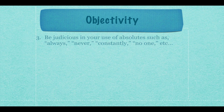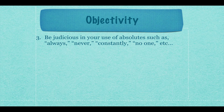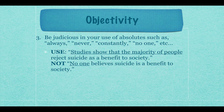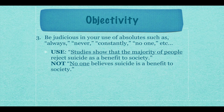You also want to be judicious in your use of absolutes such as 'always,' 'never,' 'constantly,' and 'no one.' These can be used in academic writing, but be careful not to overuse them. For instance, you could say 'studies show that the majority of people reject suicide as a benefit to society,' but you could never say 'no one believes suicide is a benefit to society' — because it's not true, and even if it were 99.9% of people, asserting an absolute can lose readers who can think of an exception, which can disqualify your paper as valid. So be very careful with absolutes.